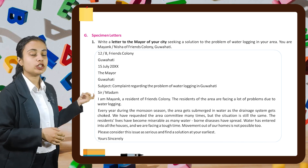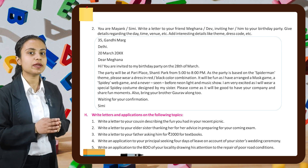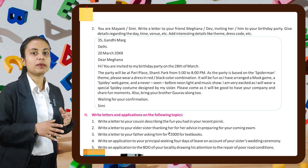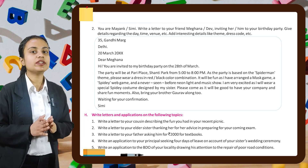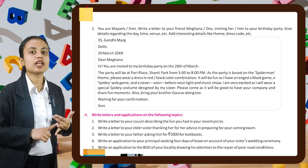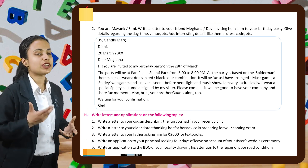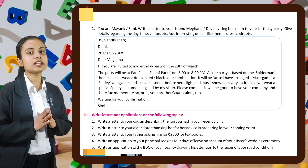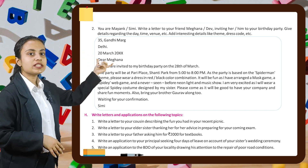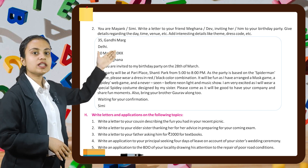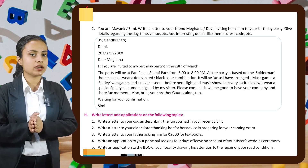At the end we write 'Yours sincerely.' Now let's see the second example. You are Mayak or Simi. Write a letter to your friend Meghna or Dev inviting her or him to your birthday party. Give details regarding the date, time, venue, etc. Add interesting details like theme, dress code, etc. This is an example of an informal letter. Here also we start with the address — 35 Gandhi Marg, Delhi. Then we write the date. After that we start with 'Dear Meghna.'